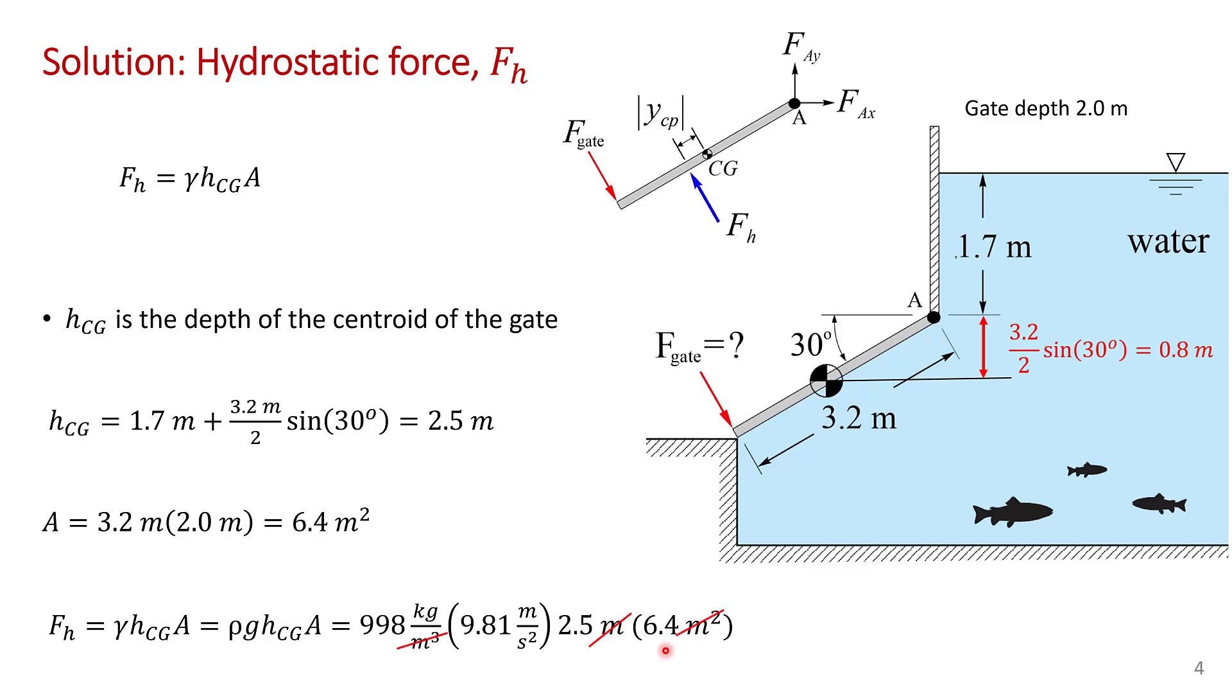Now we should check our units here. You can see that meters cubed cancels with meters cubed and we're left with kilogram meter per second squared which from f equals ma is a newton. So we get the correct units. So the hydrostatic force works out to be 156.6 kilonewtons.